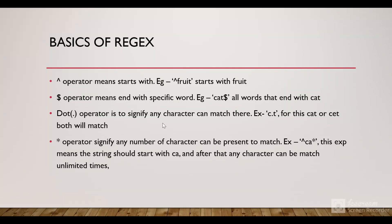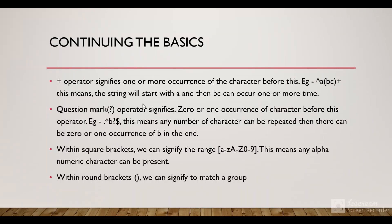The star (*) operator signifies any number of characters can be present to match. For example, '^ca.*' indicates it should start with 'ca' and after that there can be any number of characters repeated unlimited times. Then we have the plus (+) operator, which signifies one or more occurrences of the character before it. For example, 'a(bc)+' indicates it should start with 'a', and the group 'bc' can occur one or more times.